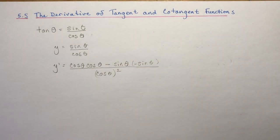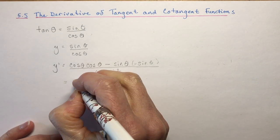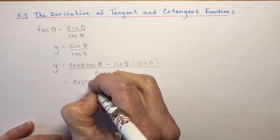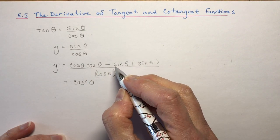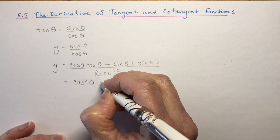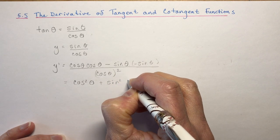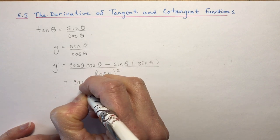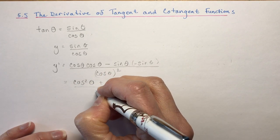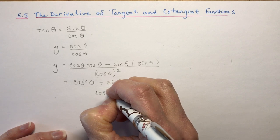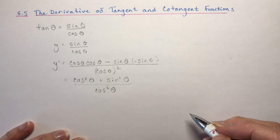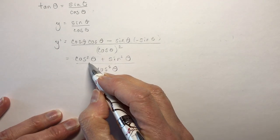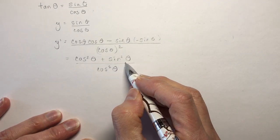Looking at the numerator, we have cos θ times cos θ, which is cos² θ, minus sin θ times negative sin θ, which gives plus sin² θ, all over cos² θ. We can simplify because we know that cos² θ plus sin² θ equals 1 from our trigonometric identities.